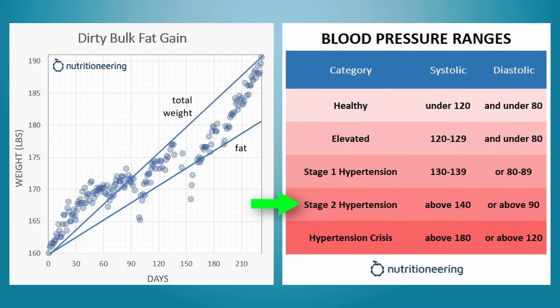Conversely, ectomorphs can indulge in cheat meals more often, especially if they need the calories. But it shouldn't become a habit, and dirty bulking isn't worth the health risks.